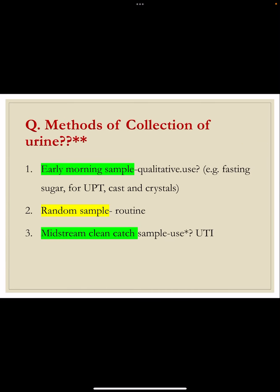An important viva question is: what are the methods of collection of urine? The first sample is the early morning sample, which is the most concentrated one. It has stable cellular elements, casts, and epithelial cells. The second is the random or routine sample, for which no special preparation is done — it can be collected anytime in a universal container with no patient preparation needed.